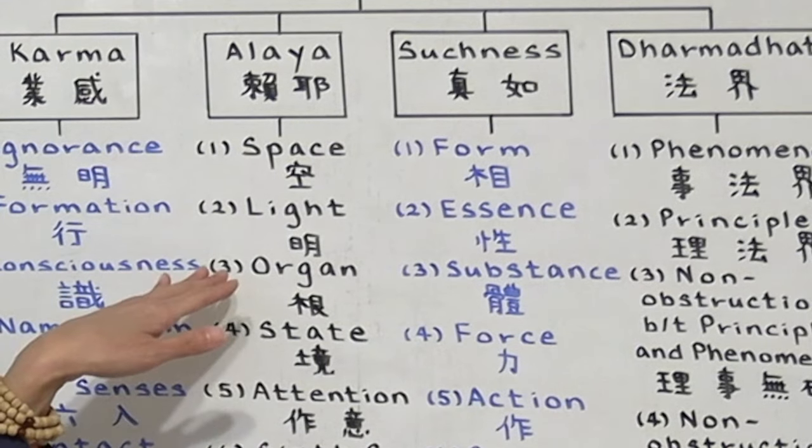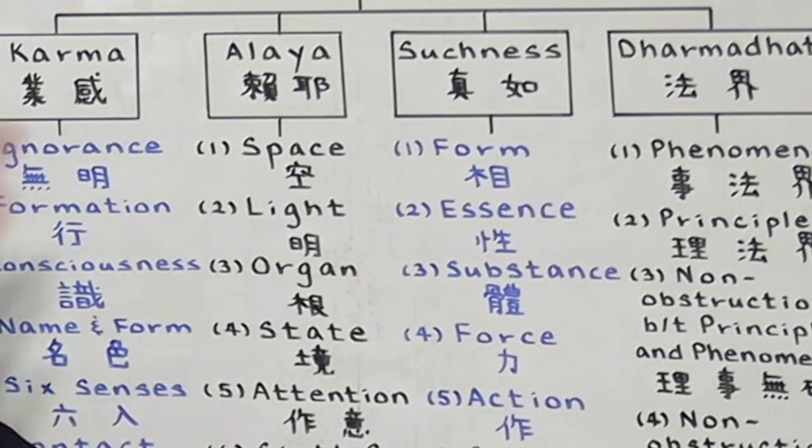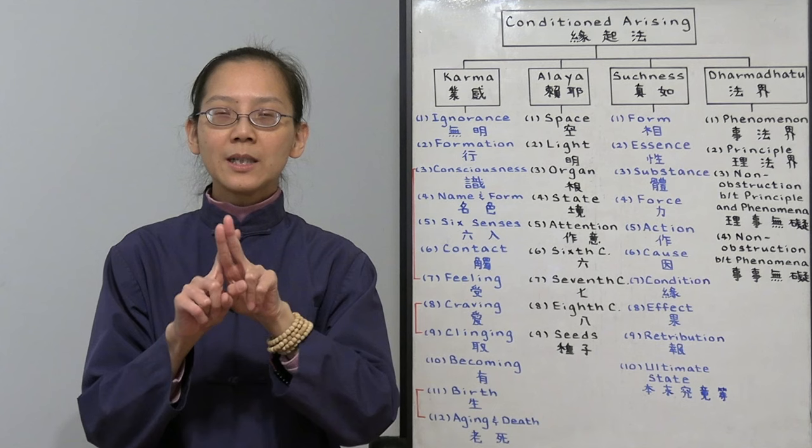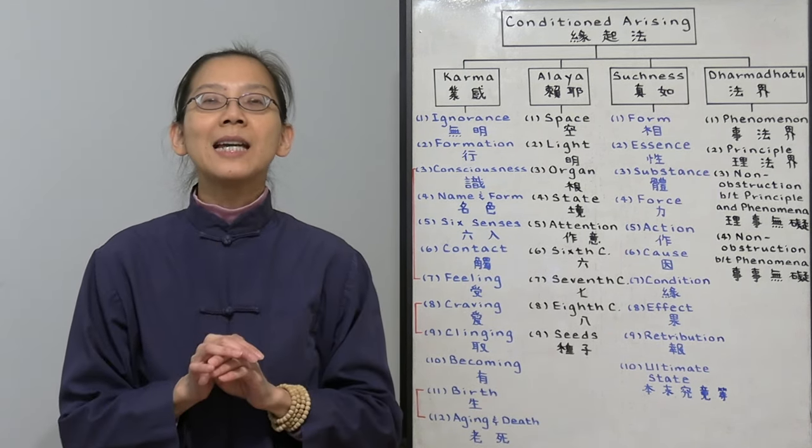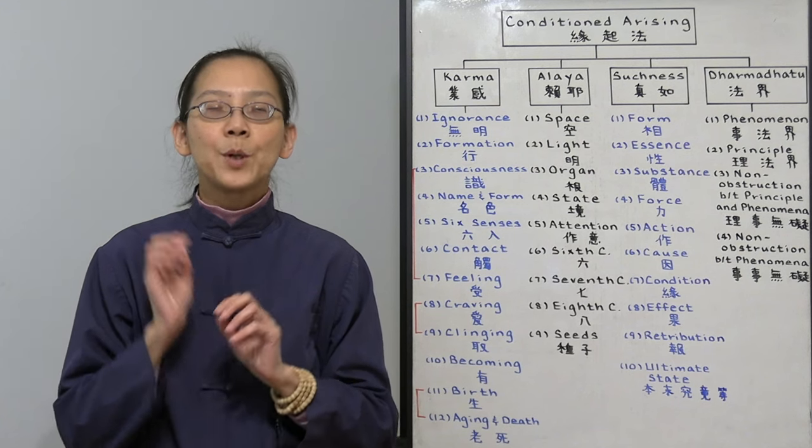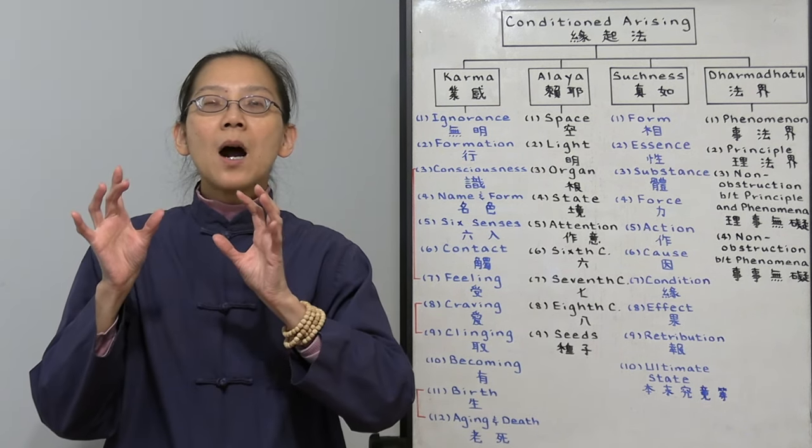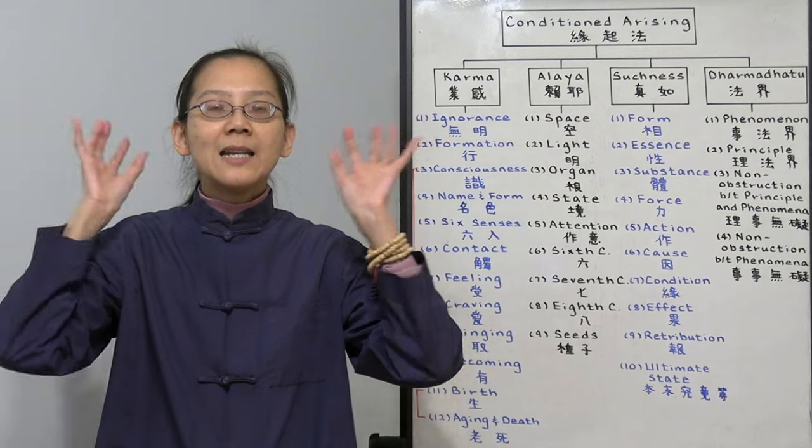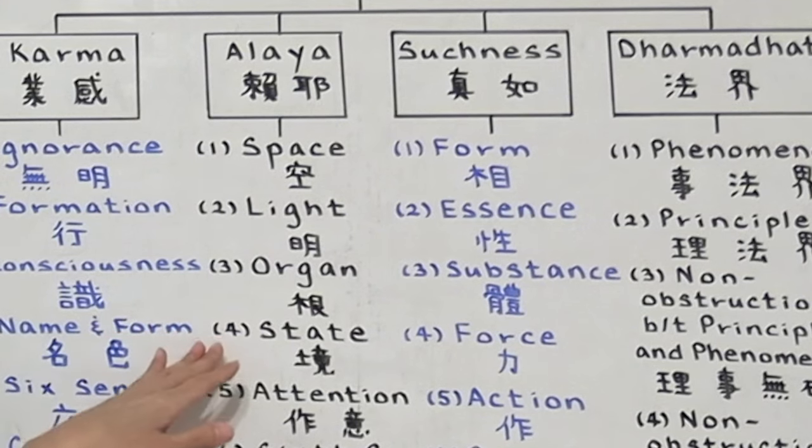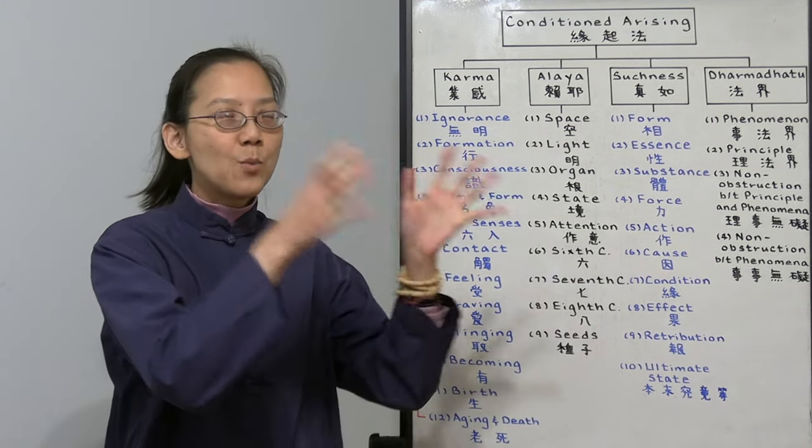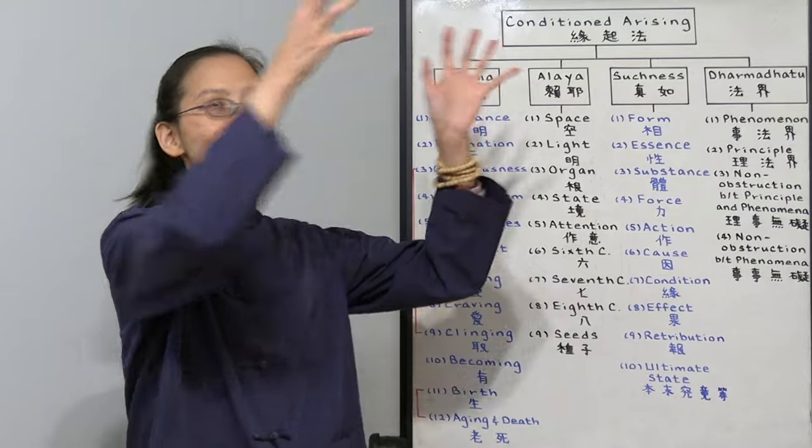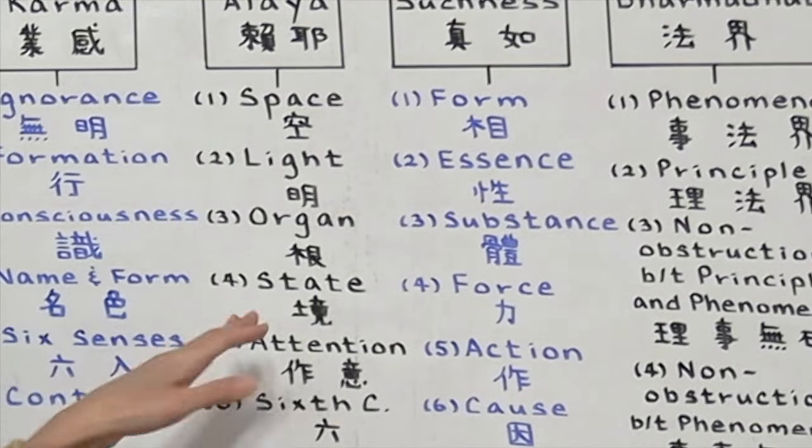Number three, we need the eye organ. There's two parts to this organ. One is the physical eye itself. Two is the organ of purity, the mental part of our eye organ. Number four, we also need the state. We need the sense object. Whatever you want to see, I want you to see this and that, an object. We call it the state.